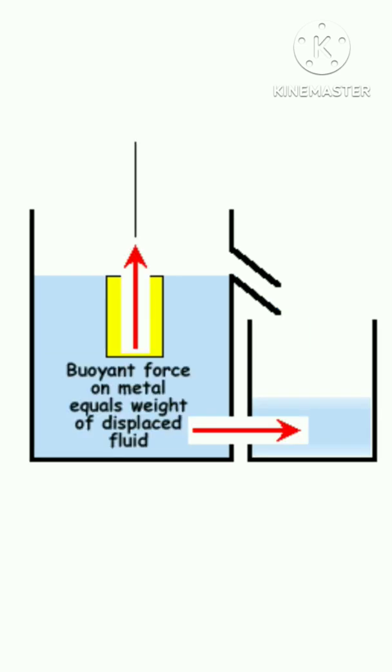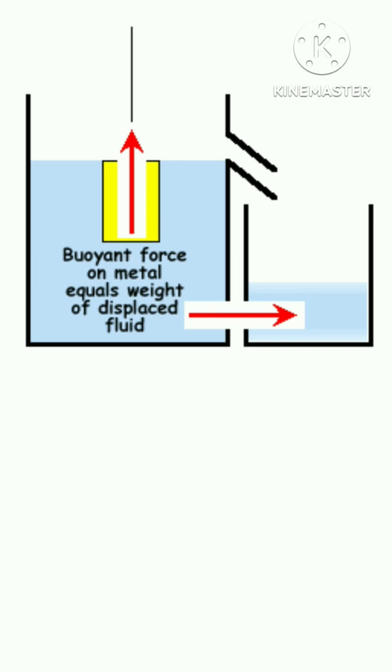Here, weight of the fluid displaced by the object is equal to magnitude of buoyant force. The formula of Archimedes principle is Fb equal to minus rho into g into V.